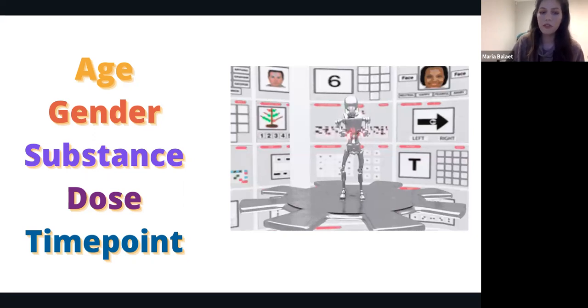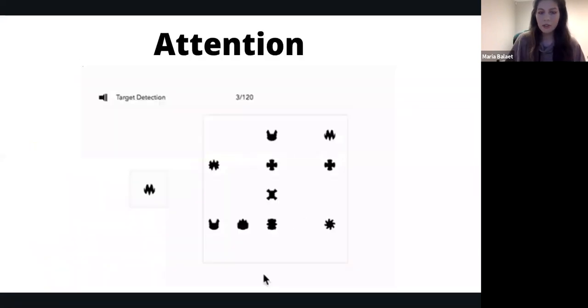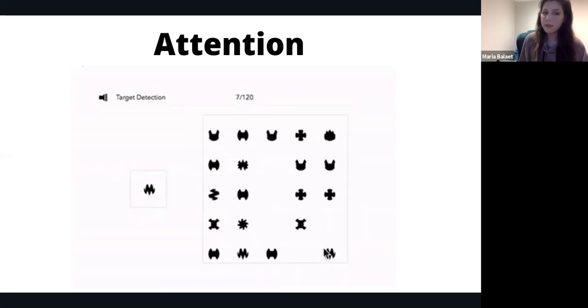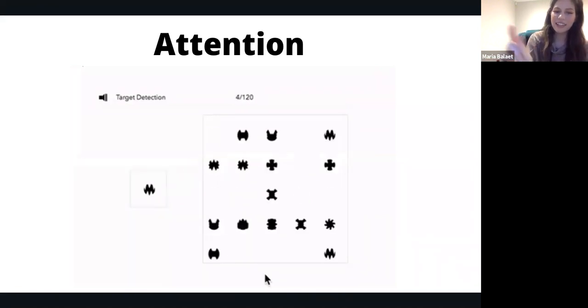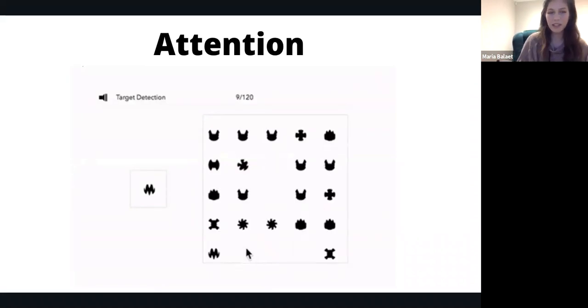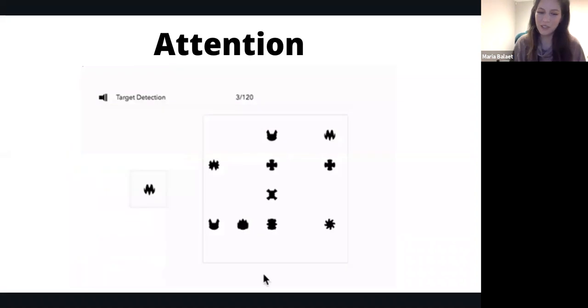After they've answered a couple of questions, that is when they are going to be invited to play a few cognitive tasks that are going to inform us about how different domains of cognition are affected in that particular moment. We are looking at tasks that measure attention, for example. Here is an example of a task that gives you a target which is in the small square on the left, and then people have to follow the grid on the right and click on the target that mimics the one that they have been shown. This is a really fun game to play.